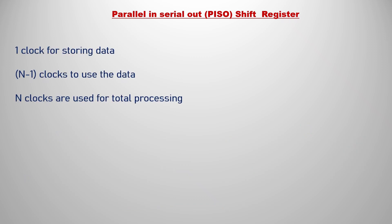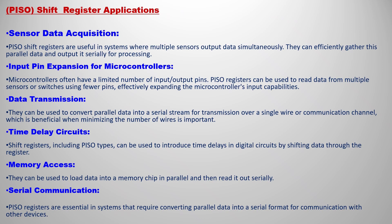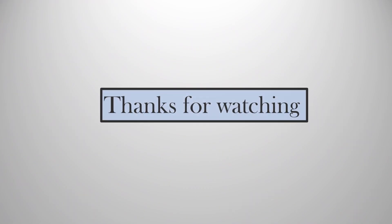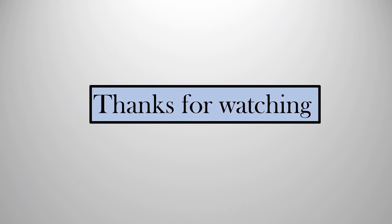For the PISO shift register, one clock is needed to store data fully, n-1 clocks to shift the data out, and n clocks total for processing. Applications of the PISO shift register include sensor data acquisition, input pin expansion of microcontrollers, data transmission, time delay circuits, memory access, and serial communication. I hope you understood this video — thanks for watching.